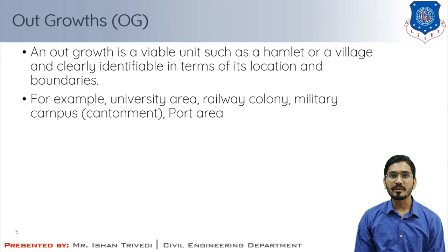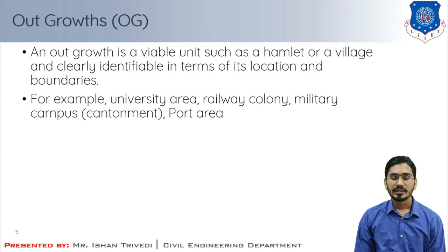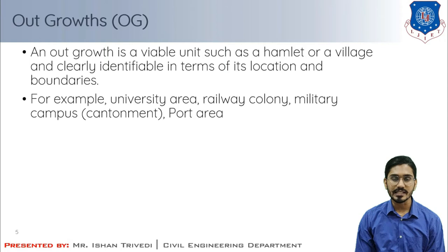An outgrowth is a viable unit such as a hamlet or a village, clearly identifiable in terms of its location and boundaries. It is a peripheral area of any town. Examples include university areas, railway colonies, military campuses, and port areas. These outgrowths come up near a statutory town, outside its statutory limit but within the revenue limit of a village or town.